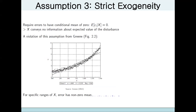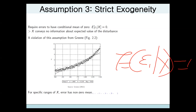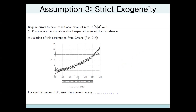Assumption 3: Strict Exogeneity. We require the error terms to have a conditional mean of zero — the expected value of the stochastic variable given X should equal zero. X communicates no information about the expected value of the disturbance. This is written as E(epsilon | X) equals zero, meaning the error term has zero mean.